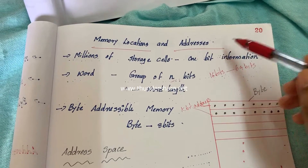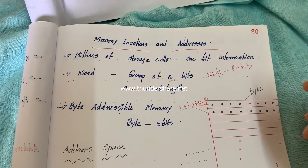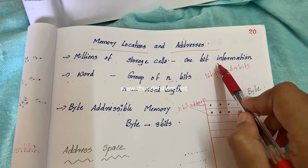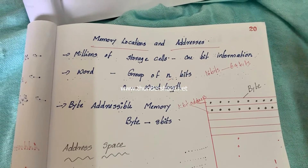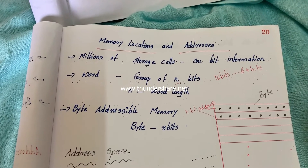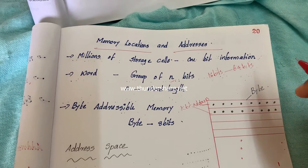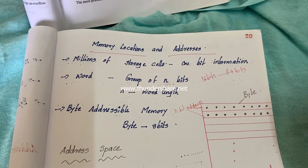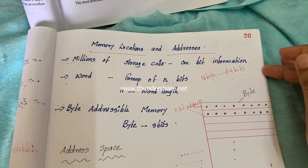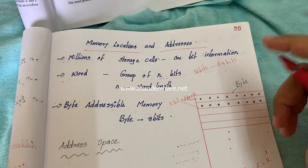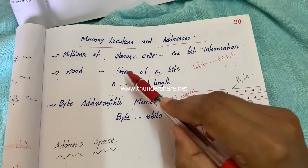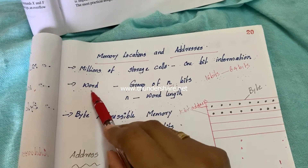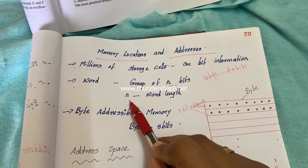Our topic is Memory Locations and Addresses. A memory is organized in such a way that it consists of a large number of semiconductor cells. Each cell can store a single bit of information. Basic memory operations like memory access, storage, or retrieval do not support accessing a single cell at a time because a single cell stores only a single bit. Memory is organized so that each memory access operation can access a group of n bits at a time. This group of n bits forms a memory word, and n indicates the length of that word.